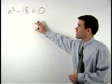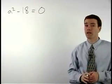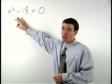The equation a squared minus 18 equals 0 is called a quadratic equation because we have a squared term as our highest power.